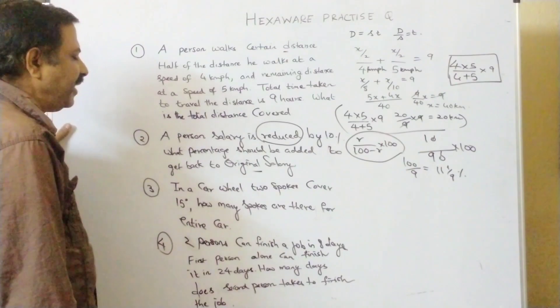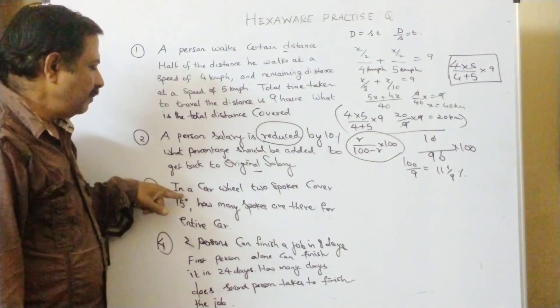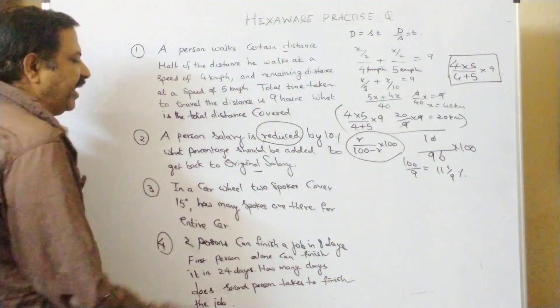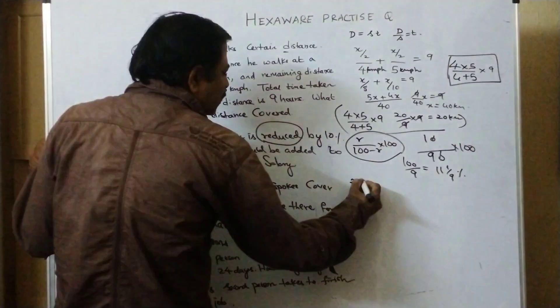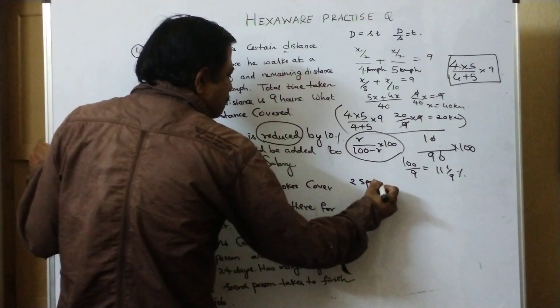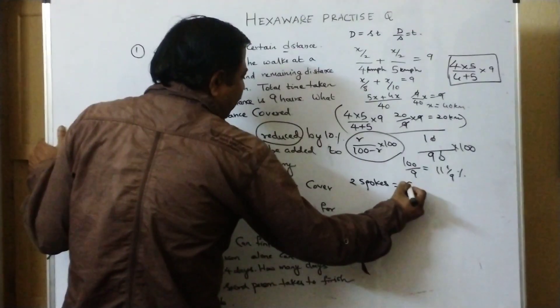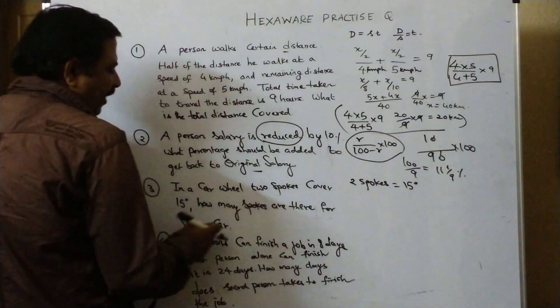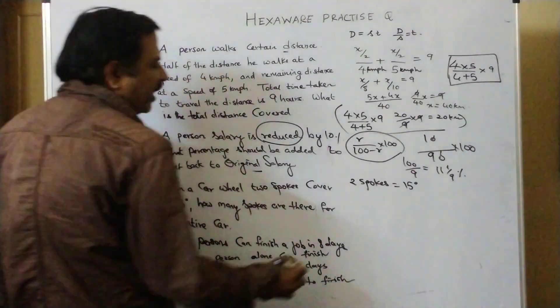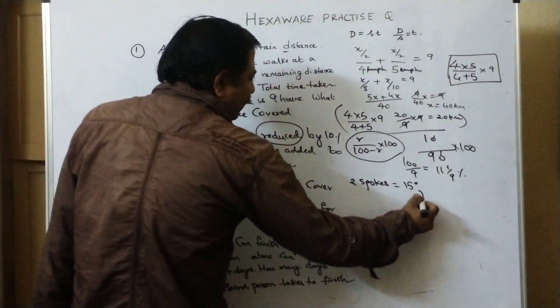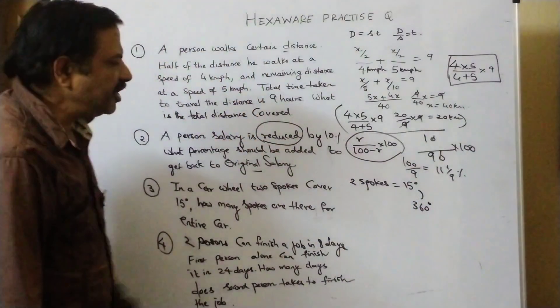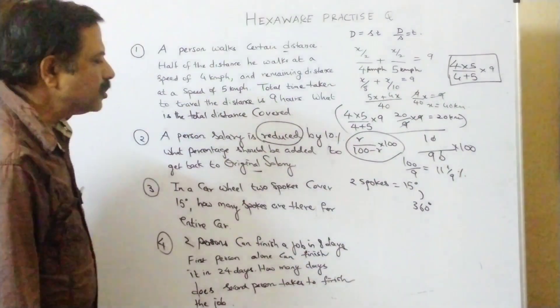Let us see the next one. In a car wheel two spokes cover 15 degrees. Two spokes covering 15 degrees. How many spokes are there for entire car? Now, dear friends, entire means 360 degrees.